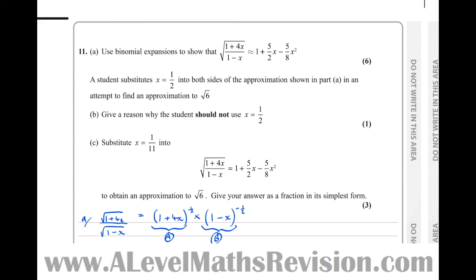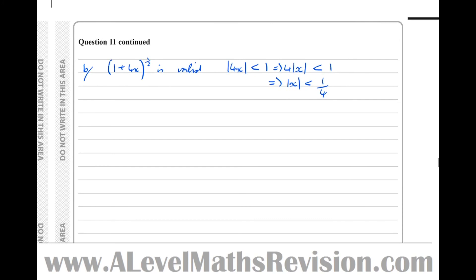OK, so part B, so we have the expansion 1 plus 4x to the power of 1 half. Now that's valid when mod of 4x is less than 1, or when 4 mod x is less than 1. That separates to mod 4 mod x. However, mod 4 is just 4. Which means that mod x has to be less than 1 quarter for that to work. So I don't need to continue anymore. I know for that expansion to work, it only works for mod x less than 1 quarter. But here in the question, it's telling us why you should not use x equals 1 half. So we've got 1 half is greater than 1 quarter, therefore not valid. And that's part B answered.